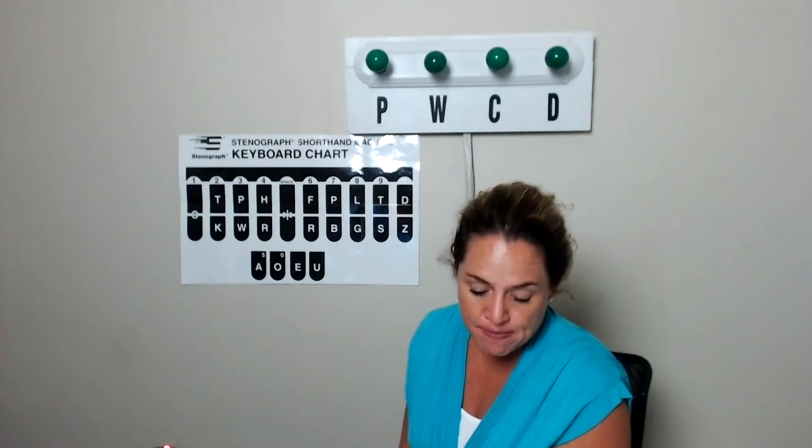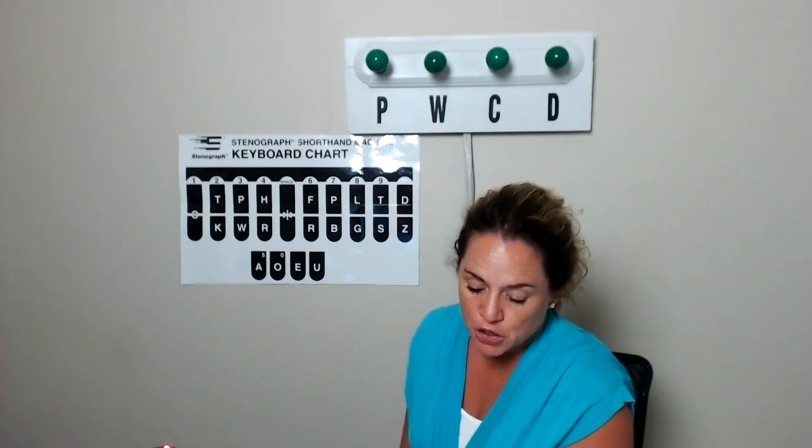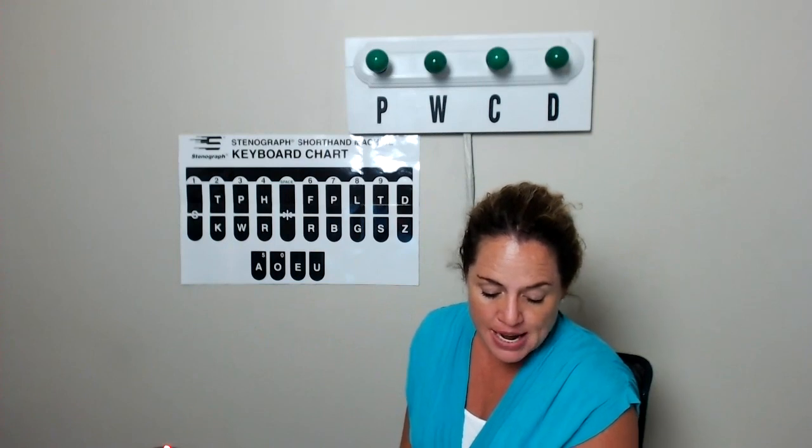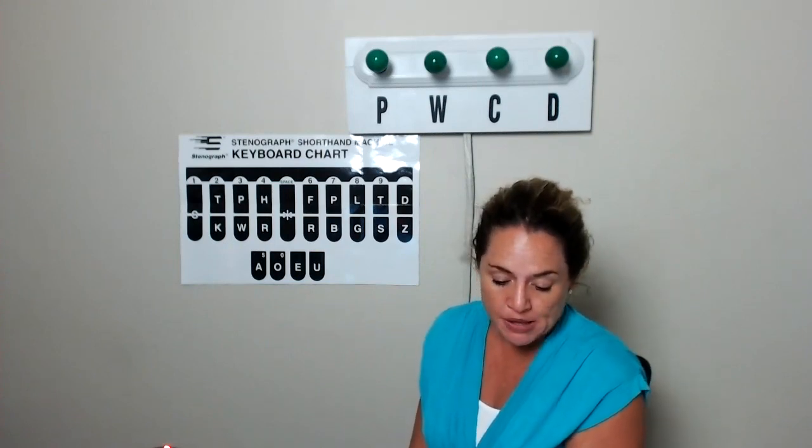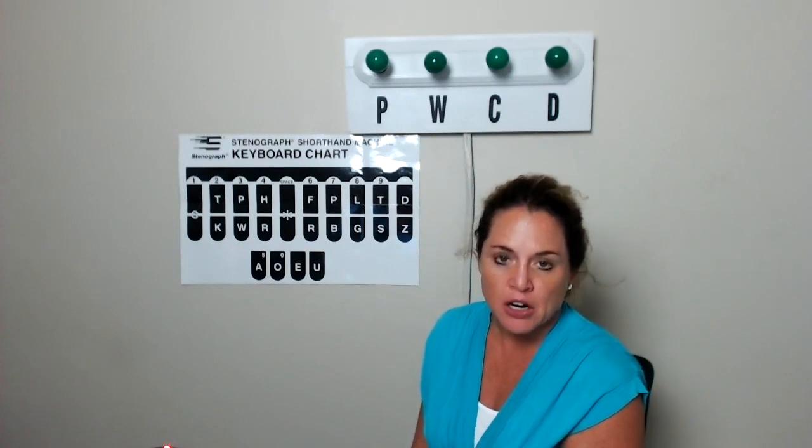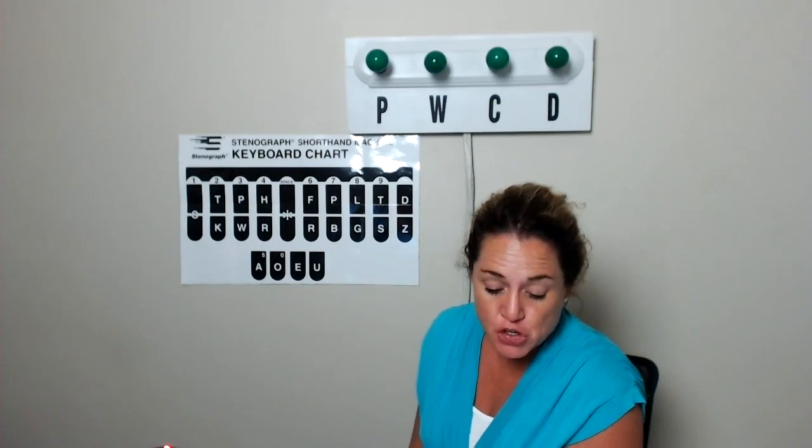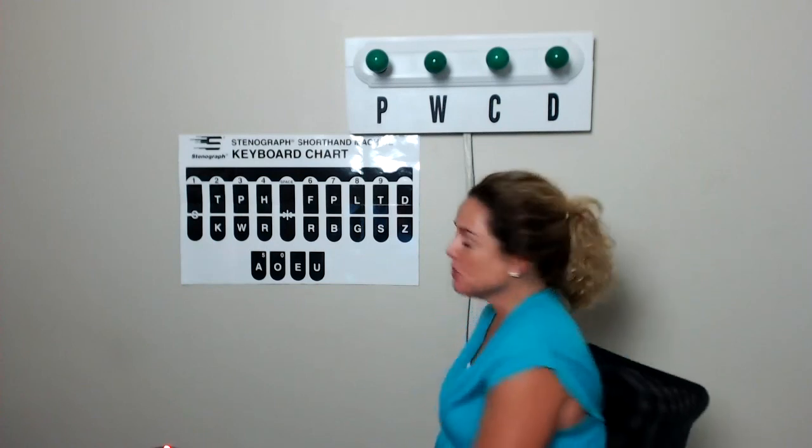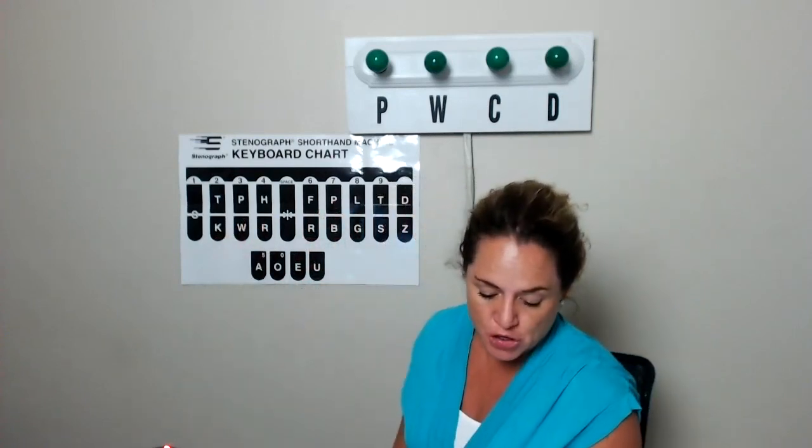Farm. F-A-R-M. Storm is a long O. Storm. Term. Firm. Now worm is a short O. We don't say warm. I get that a lot. Is that a long O? No, it's not. W-O-R-M. Germ. That has a J sound, so we keep the J. J-E-R-M even though it's spelled with a G. Germ.